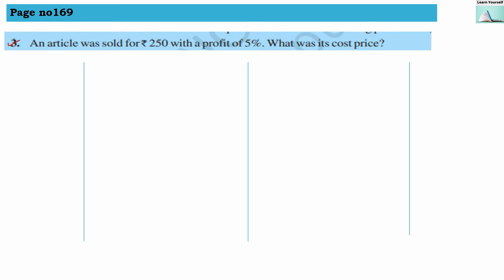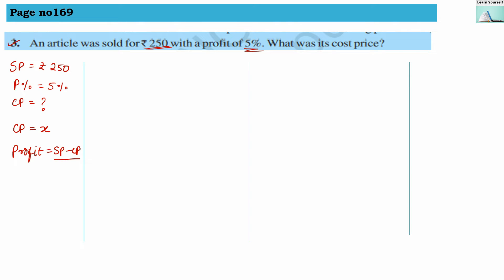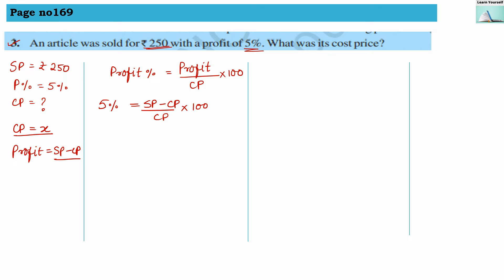Third numerical: an article was sold for rupees 250, so selling price is rupees 250, with a profit of 5%, so profit percentage is 5%. We have to find the cost price. We do not know cost price or profit, so we assume cost price equals x, and profit equals selling price minus cost price.